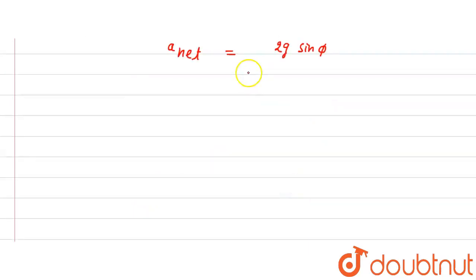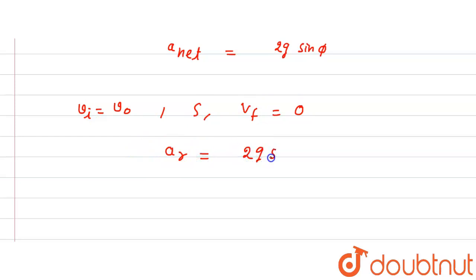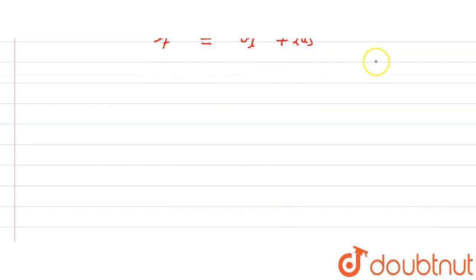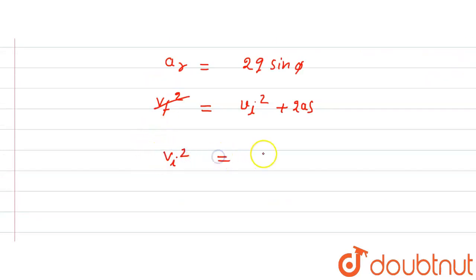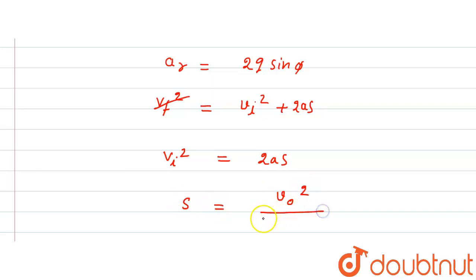The net acceleration (retardation) is 2g sinφ. With initial velocity v naught, final velocity 0, and distance s, we apply v² = u² + 2as. Since final velocity is 0: v naught squared = 2 × 2g sinφ × s, so s = v naught squared upon 4g sinφ.